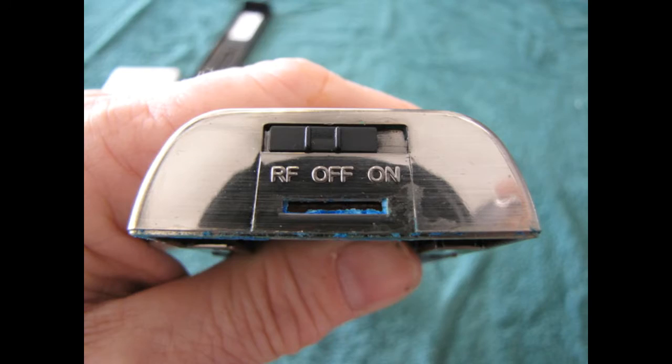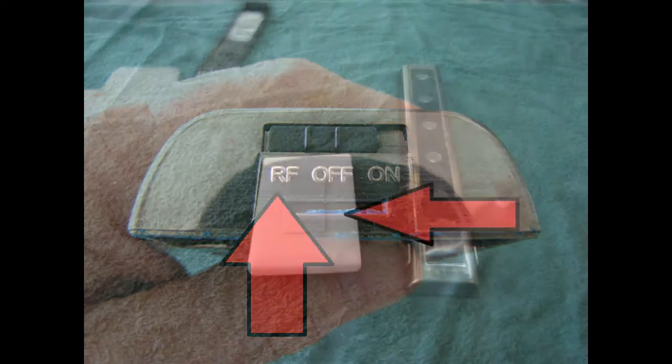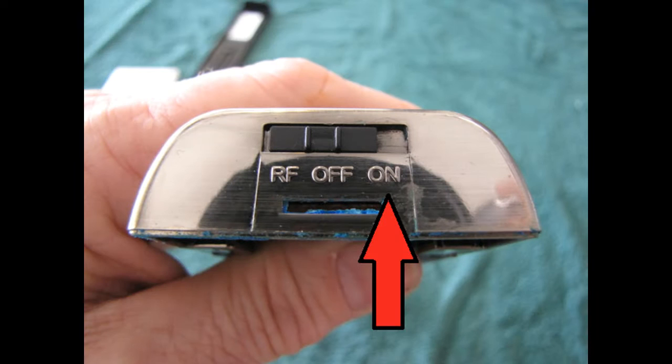Here's how we're going to do this. We're going to modify the control switch on the actual light itself. Now, this RF position turns on the radio receiver inside the light, and it allows this remote switch to work. We don't want to mess with that. What we will do is add an extra circuit to the on position of the switch, right here.